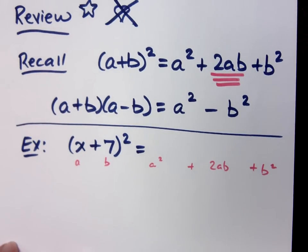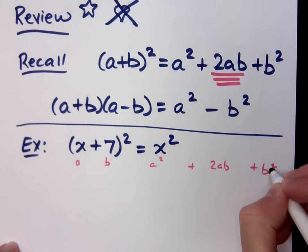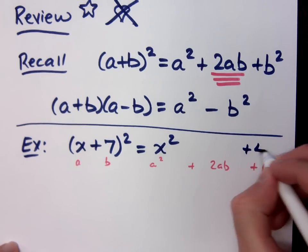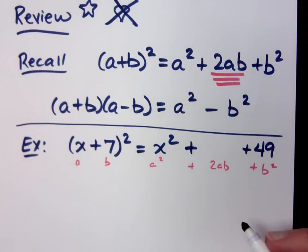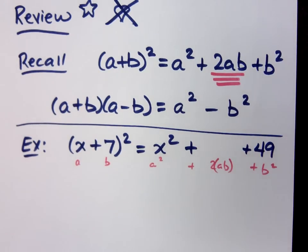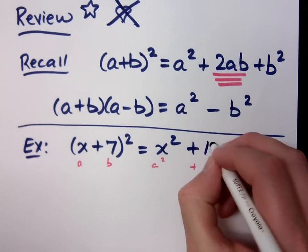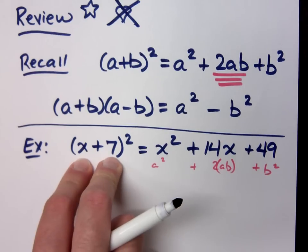What's a²? What's b²? It's 49. The middle piece is 2 times a times b. What might be better for you to see is this way. Do the product of a and b first. Multiply a and b first and then double that. What do you get? I get 14x. x times 7 is 7x.